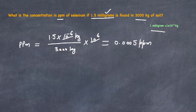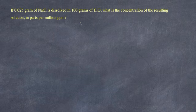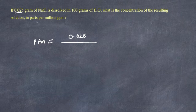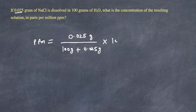Let's do another example. If 0.025 grams of sodium chloride is dissolved in 100 grams of water, what is the concentration of the resulting solution in Parts Per Million? The concentration in PPM equals 0.025 divided by the total mass of the solution. The total mass is 100 grams of water plus 0.025 grams of sodium chloride, all multiplied by 10 raised to power 6.